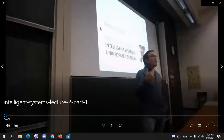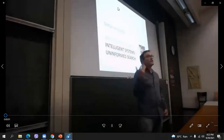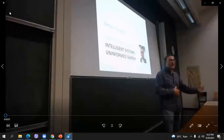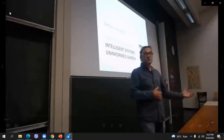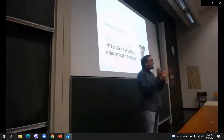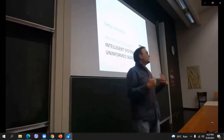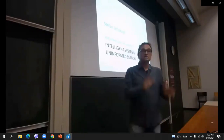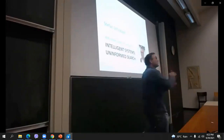Let us discuss uninformed search in the context of intelligent systems. We can define rationality as the ability to understand goals and maximize actions to get as close to the goal as possible. Given that notion of rationality, we define the state space representation, which is a common format to represent problems at a certain level of abstraction, helping you solve problems at the right level of complexity.